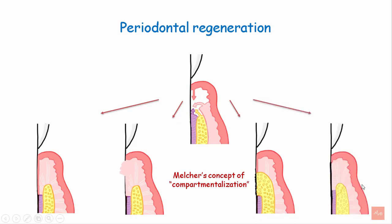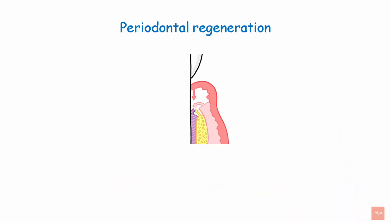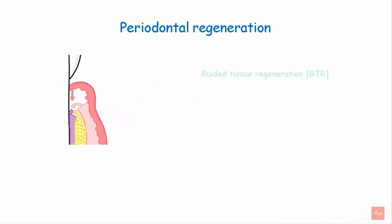But when the periodontal cell reaches the site, it leads to periodontal regeneration with restoration of the fibrous attachment, cementum formation, and the alveolar bone, as the periodontal ligament contains the mesenchymal cells. With this concept, guided tissue regeneration was introduced.